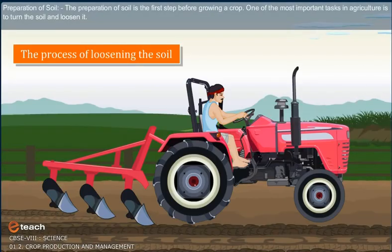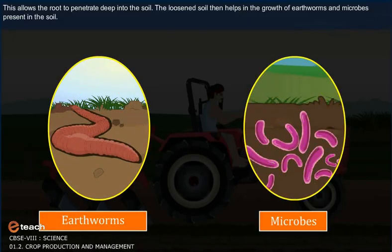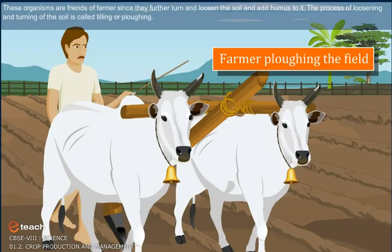Preparation of soil. The preparation of soil is the first step before growing a crop. One of the most important tasks in agriculture is to turn the soil and loosen it. This allows the root to penetrate deep into the soil. The loosened soil helps in the growth of earthworms and microbes present in the soil. These organisms are friends of the farmer since they further turn and loosen the soil and add humus to it. The process of loosening and turning of the soil is called tilling or ploughing.